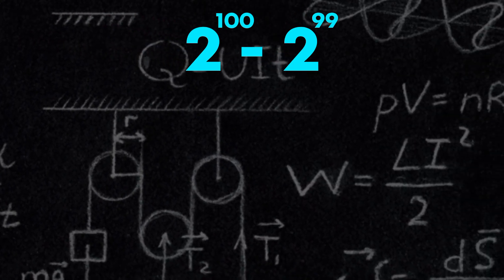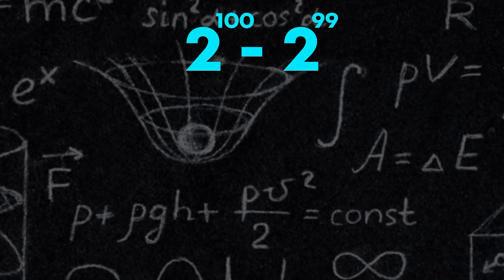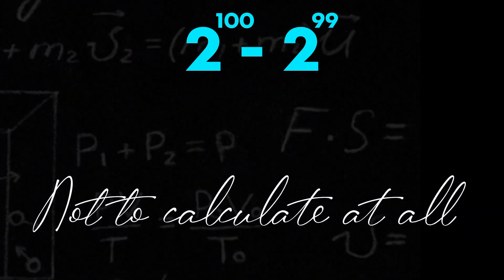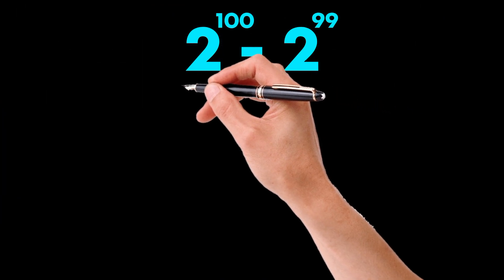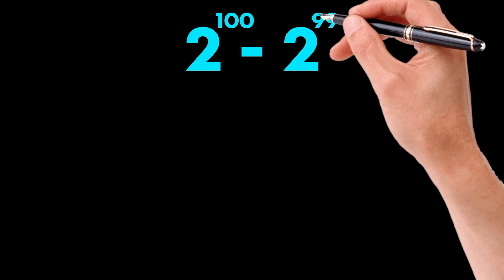Most people imagine enormous numbers, long multiplication, or an impossible calculation, but the trick is not to calculate those huge values at all. Here's the key idea. When two terms share the same base, you can factor the smaller power out.